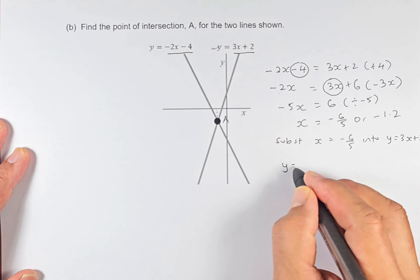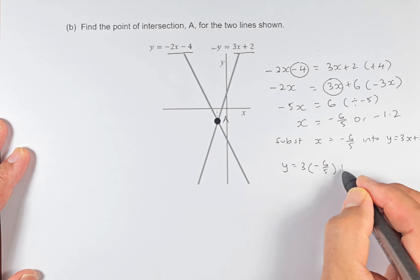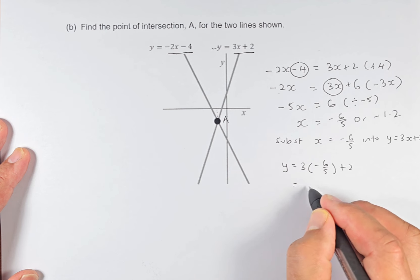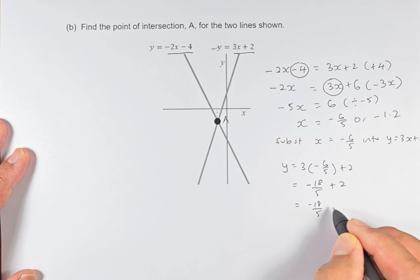Now we calculate y equals 3 times -6/5 plus 2. Simplifying, it becomes -18/5 + 2. If you know that 2 is the same as 10/5, then -18/5 + 10/5. We can simplify this: -18 + 10 equals -8/5. Or if you prefer, it's -1.6.